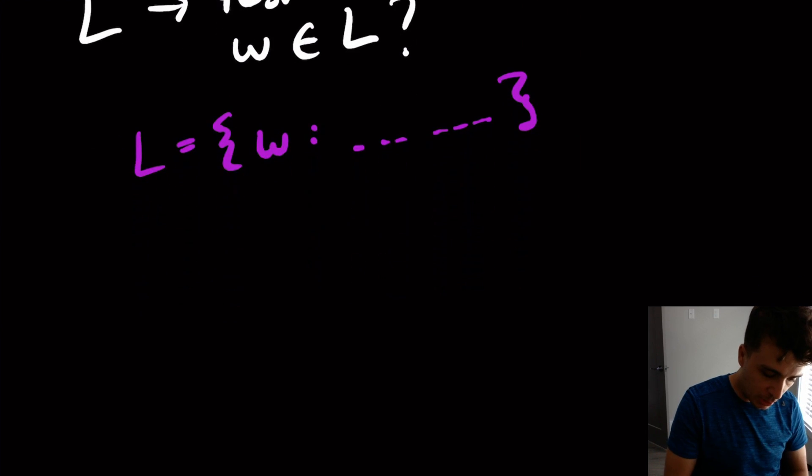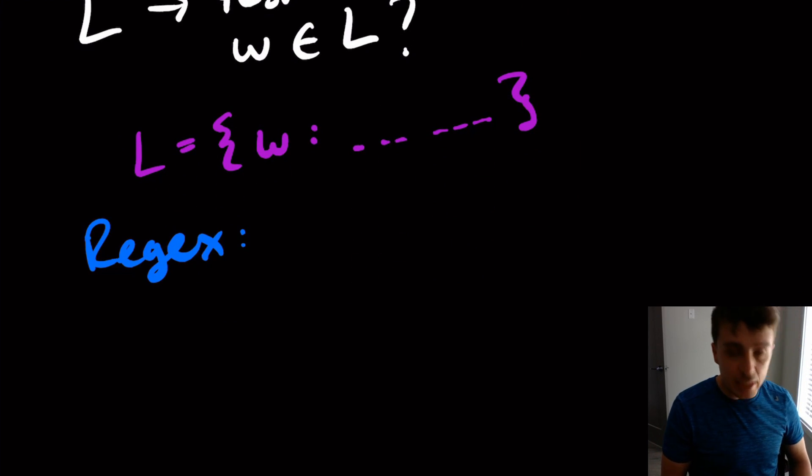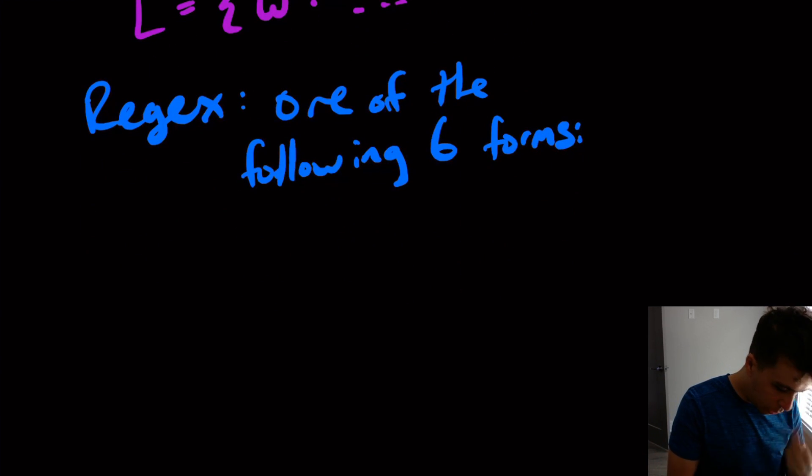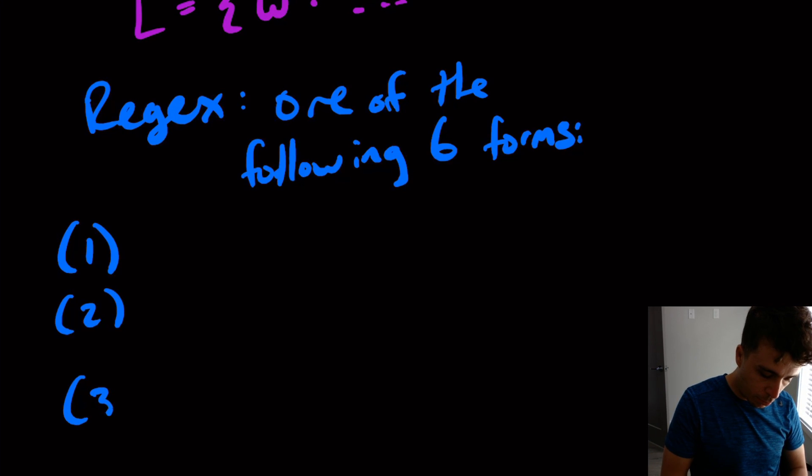So let's talk about what is a regex. So a regex is going to be one of the following six forms. So there are many definitions on what a regex actually is. And you could extend this if you wanted to. We're just going to stick with the basic definition that most books use. And there are some places you should be careful that say a regex is something when it actually isn't a regex. In this terminology, it's some other type of regex. So a regex here is one of the following six forms.